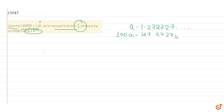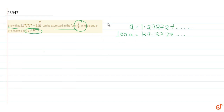100a equals 127.2727... and a equals 1.2727... Now I will subtract this equation. So 99a equals 127.2727 minus 1.2727, which gives us 126.